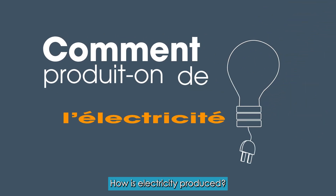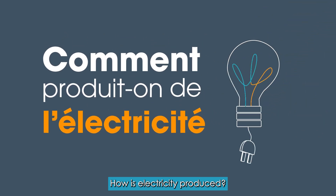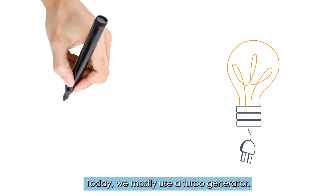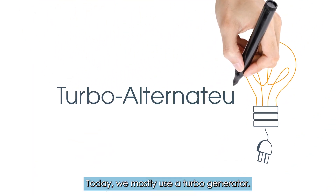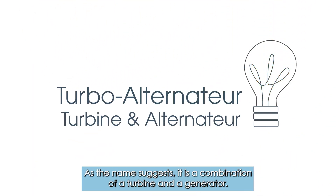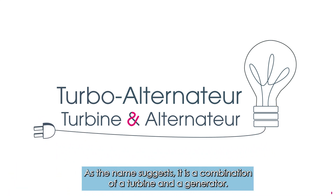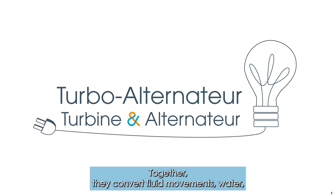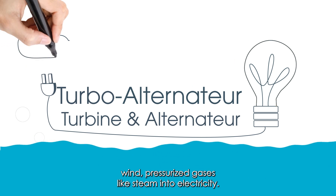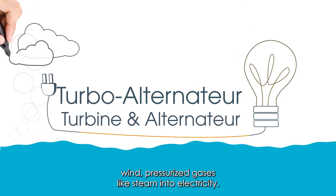How is electricity produced? Today we mostly use a turbo generator. As the name suggests, it is a combination of a turbine and a generator. Together they convert fluid movements — water, wind, pressurised gases like steam — into electricity.